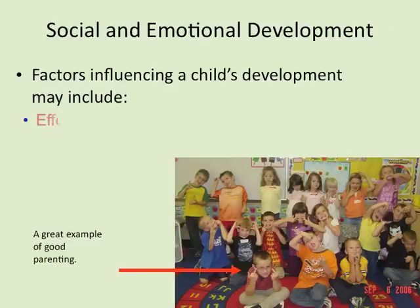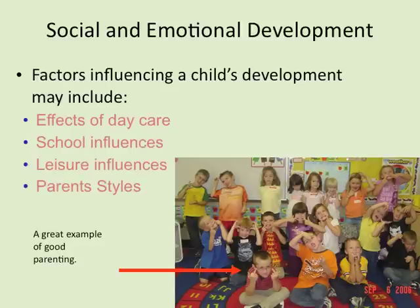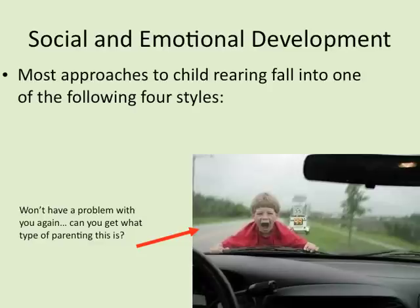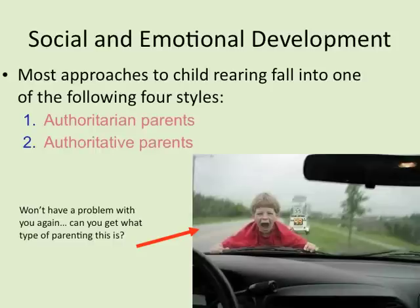Factors influencing a child's development include effects of daycare, school influences, leisure activities, and parenting styles. Children who go to daycare are typically slightly more independent than kids who stay home. School influences depend on whether it was a suburban or urban school. Leisure influences matter too — being involved in sports versus staying home affects who you are socially and emotionally. All of these are completely intertwined. Most approaches to childrearing fall into one of four parenting styles: authoritarian, authoritative, permissive, and uninvolved.